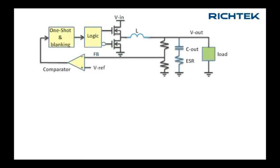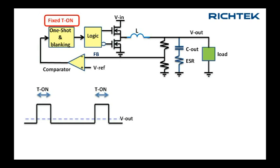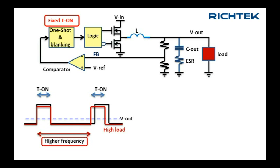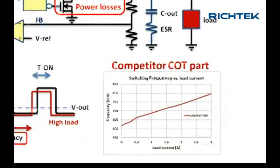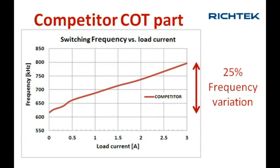One of the drawbacks of COT buck converters is their large frequency variation over operating conditions. Even with defined input and output voltages, a fixed t-on will mean that frequency will have to increase at higher load levels to compensate for the power losses in the MOSFETs and inductor. Competitor COT parts can easily show 25% frequency variation at different load conditions, which can lead to unexpected noise and interference problems.